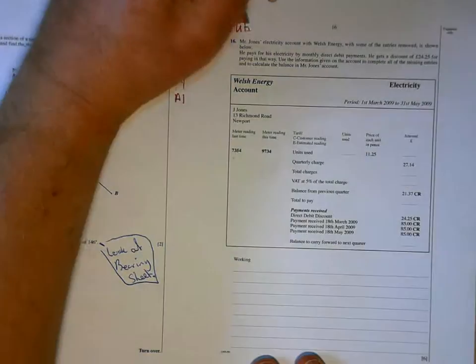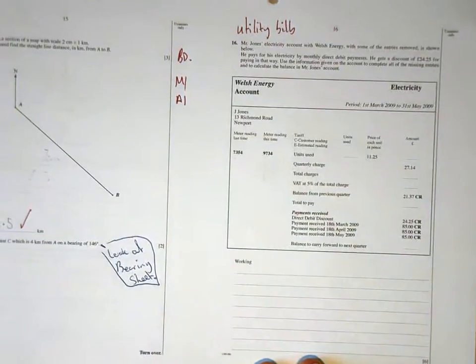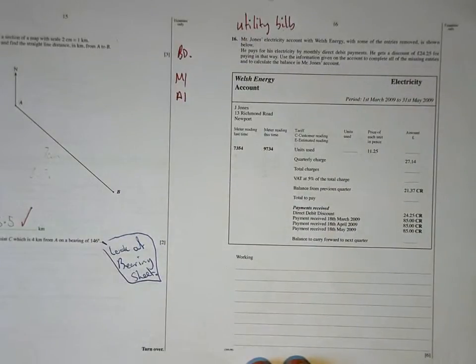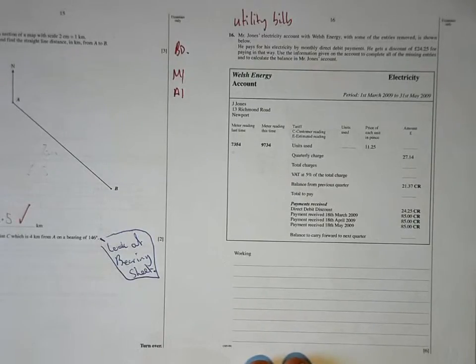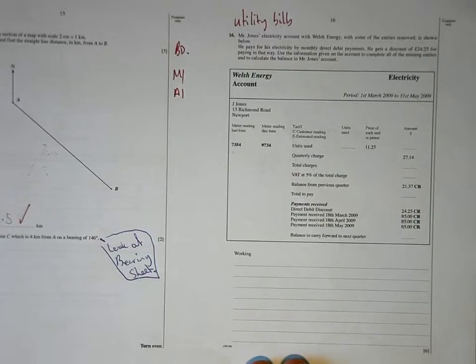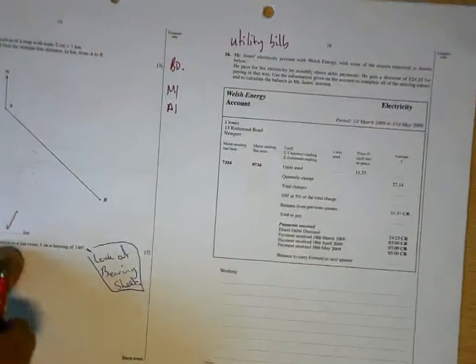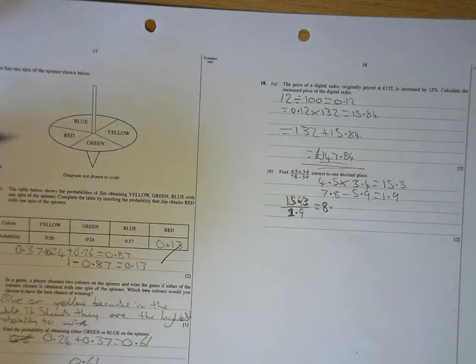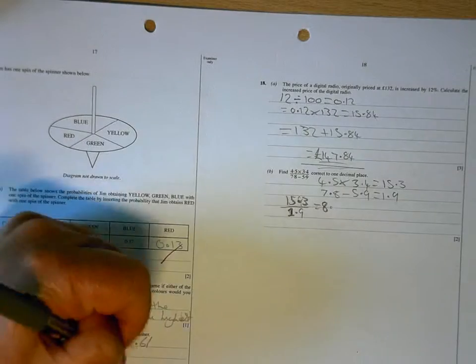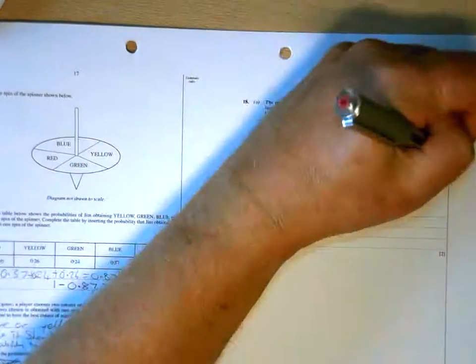Similarly, this is a topic called utility bills. It's well worth you practising those yourself in a quiet room, because you need to concentrate. They can be quite confusing. But if you have a look on the website, in the topic section on utility bills, I'll have a practice of those. That is correct. That is correct. That is correct. Good. Five marks for that. That is correct. Three marks.